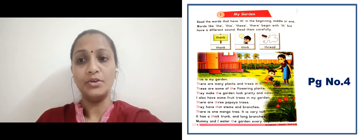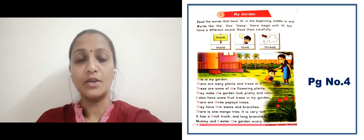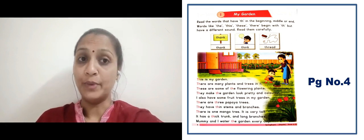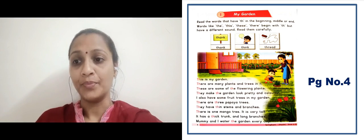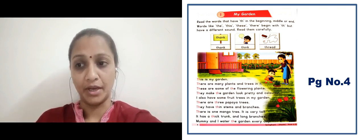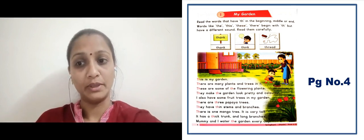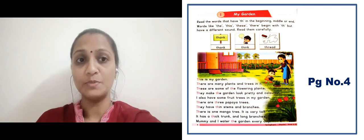This is my garden — yeh mera garden hai. There are many plants and trees in it. These are some of the flowering plants — yeh jo plants hain woh flowers dene wale hain. They make the garden look pretty and colorful. I also have some fruit trees in my garden. There are three papaya trees. They have thin stems and branches — patli si stem aur patli branches hain.